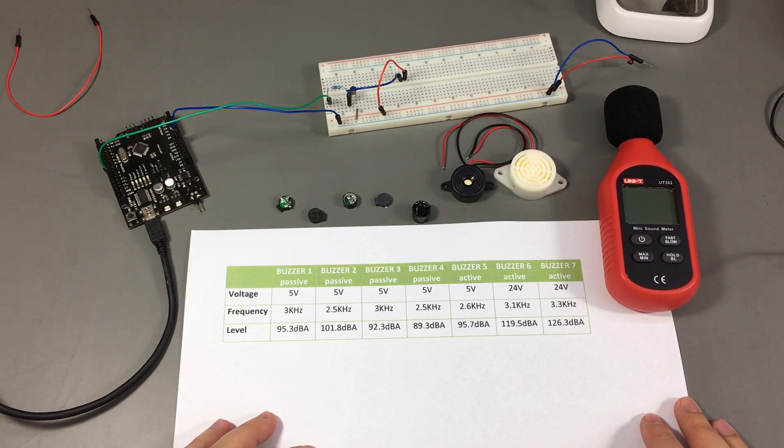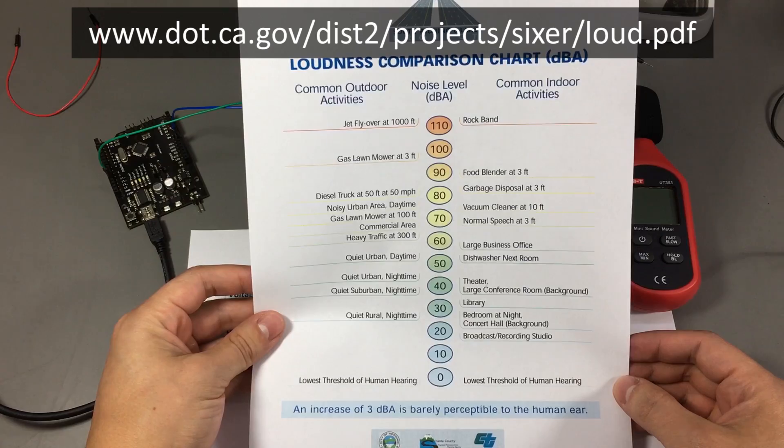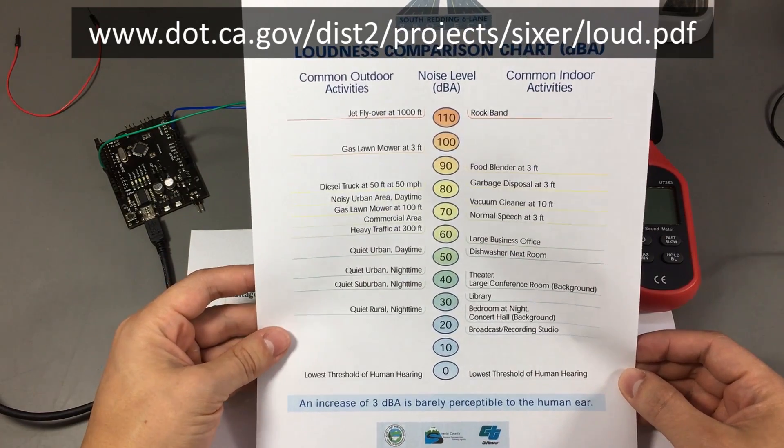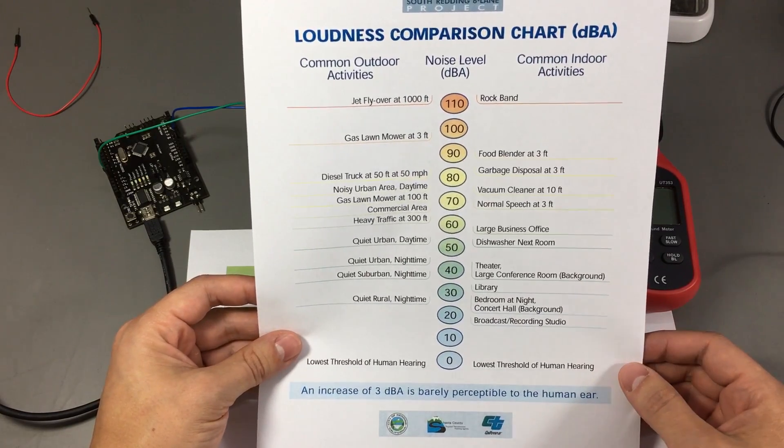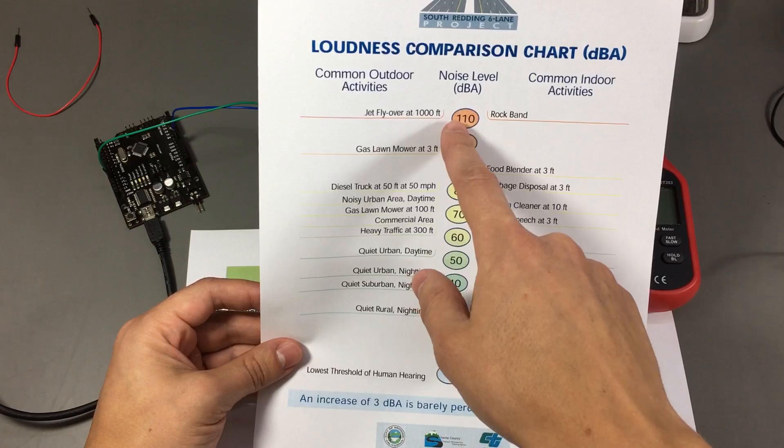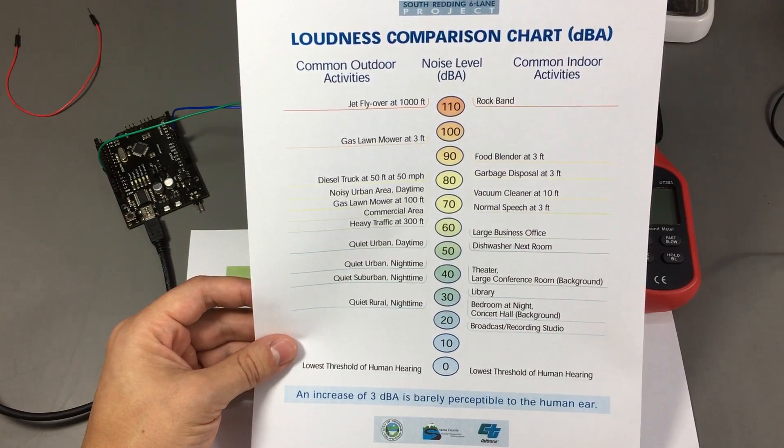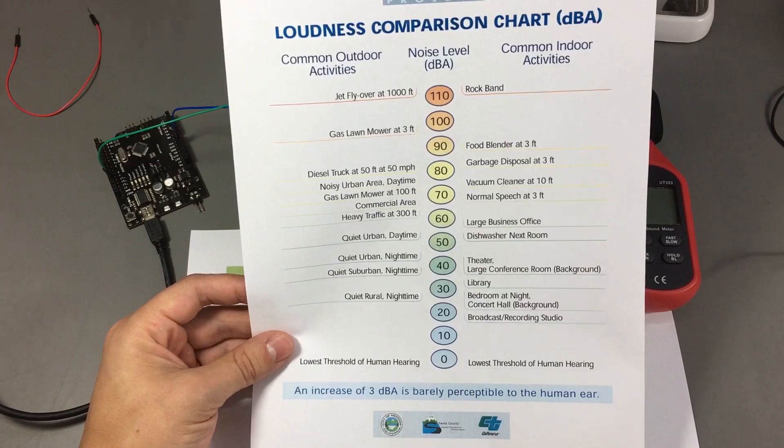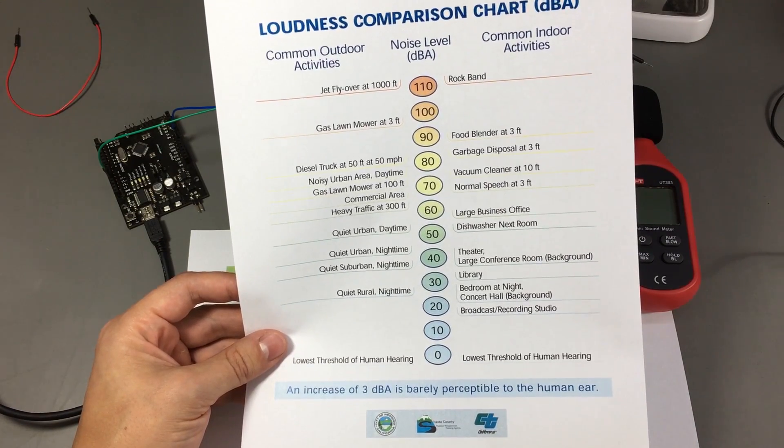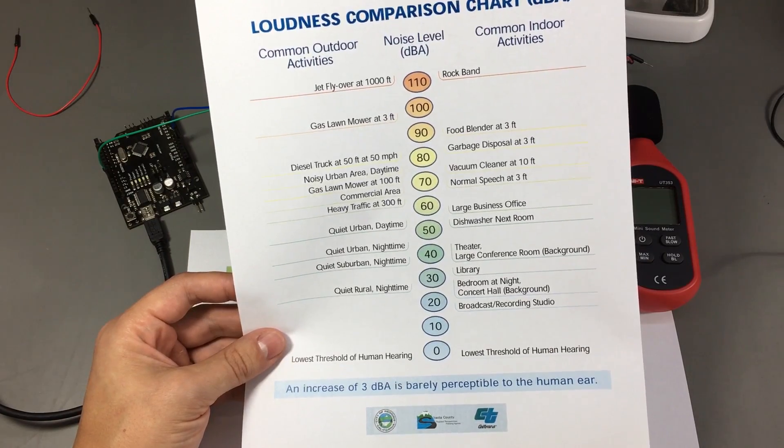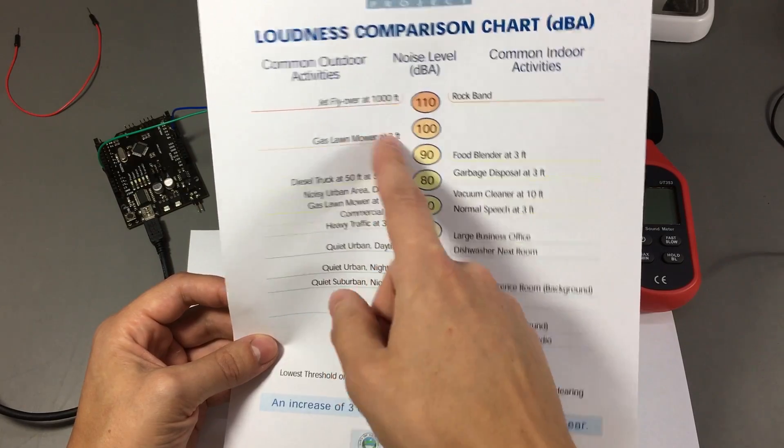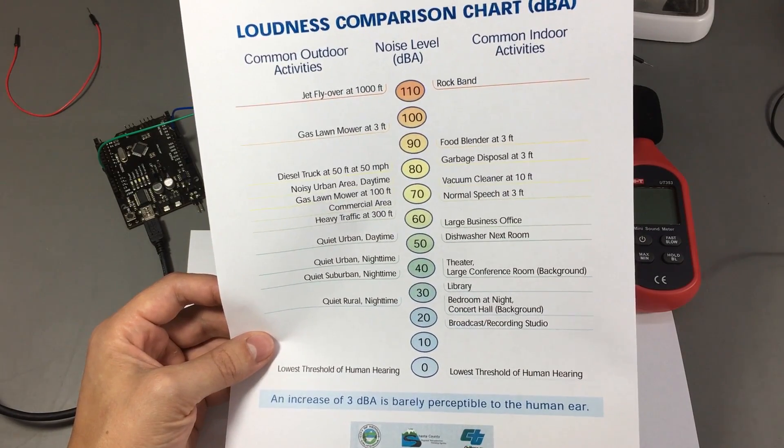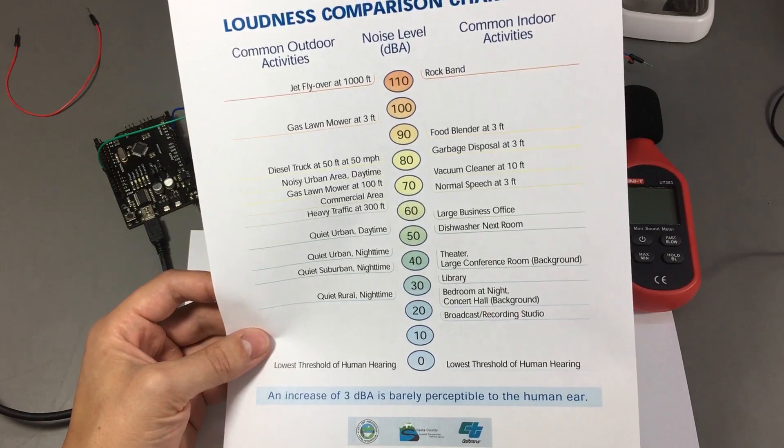Here is for comparison a chart I found online that shows a comparison between different dBA levels and common noise sources that the human would encounter. As you can see, the graph basically stops at 110 dBA because you don't encounter sources over that value that often. So standing near a 120 dBA buzzer like I did today is certainly not something you'd want to do because it might hurt your ears. According to this graph, it is higher than a jet flying over at 1,000 feet. For example, if I were to ever redo an experiment like this, I would use some kind of ear protection.